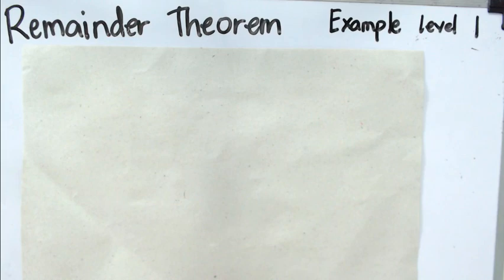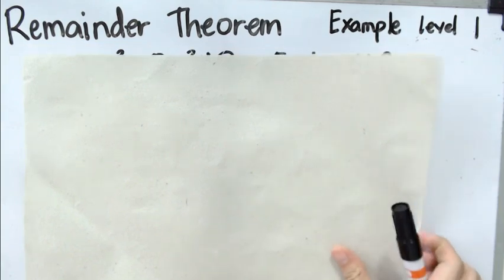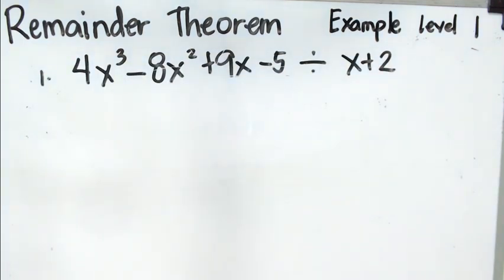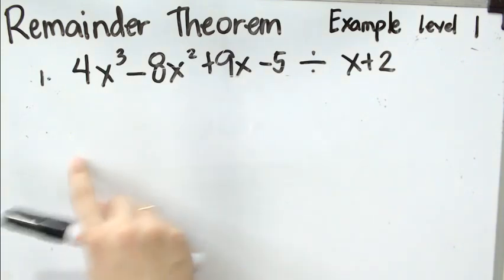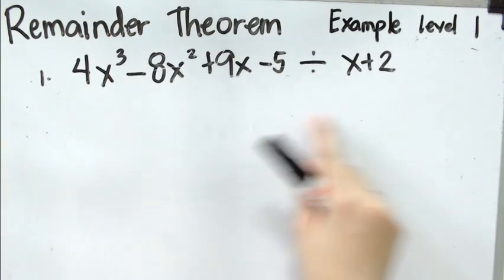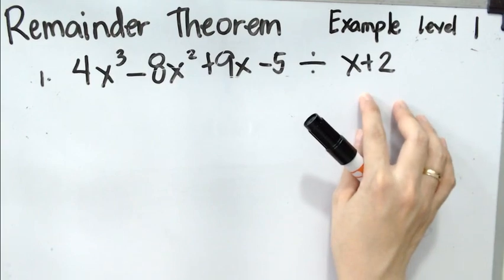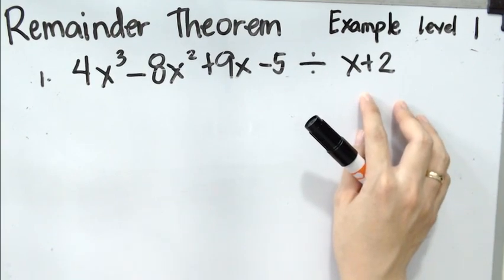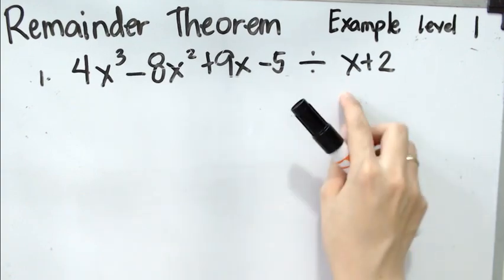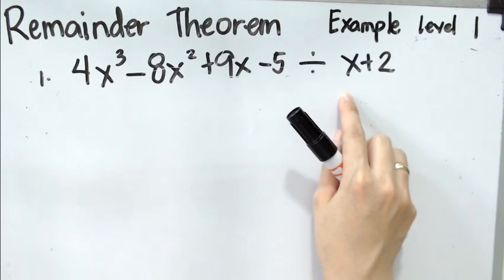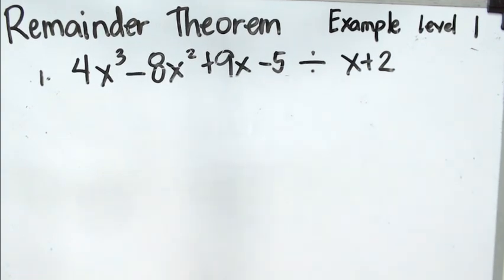How? Let's take a look at our first example. We have here 4x³ minus 8x² plus 9x minus 5, divided by x plus 2. When a polynomial is divided by a linear factor in the form of this one, or x minus c, then the remainder is simply the value of the polynomial evaluated at the value of c.